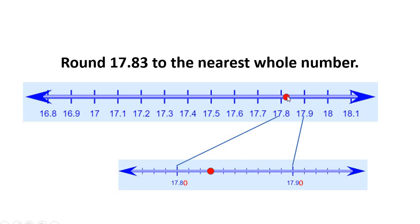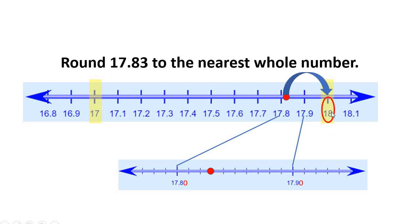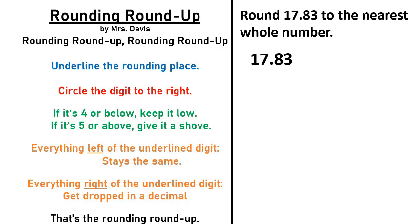So going back to this number line, it looks like it's going to be about there — it's closer to seventeen and eight tenths. Now, this still wants me to round to the whole number, not the tenths place. So the whole numbers are the ones place, and seventeen and eighty-three hundredths is in between seventeen and eighteen. You can definitely tell that it is closer to eighteen. So seventeen and eighty-three hundredths rounded to the nearest whole number is eighteen.